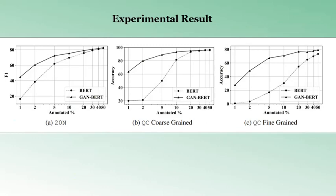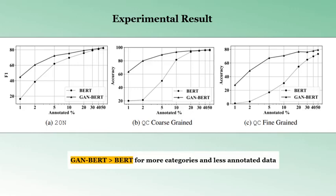Now showing a few experimental results of GANBERT in comparison to the state-of-the-art BERT model, directly from the paper. The datasets used are the 20 Newsgroups and question classification datasets. For each dataset, the authors changed the number of annotated examples used for training both BERT and GANBERT, and recorded accuracy and F1 scores. We can clearly observe that for very few annotated examples — say 1% or 2% of the total data — BERT shows very poor performance, whereas GANBERT improves results significantly. GANBERT consistently outperforms BERT for all these datasets up to at least 30% of the annotated training data.